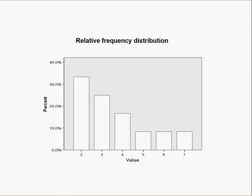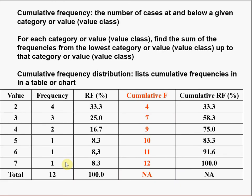This percentage distribution is referred to as the relative frequency distribution. We can also generate a bar chart showing the relative frequency distribution — the only difference is that the vertical axis is labeled differently.